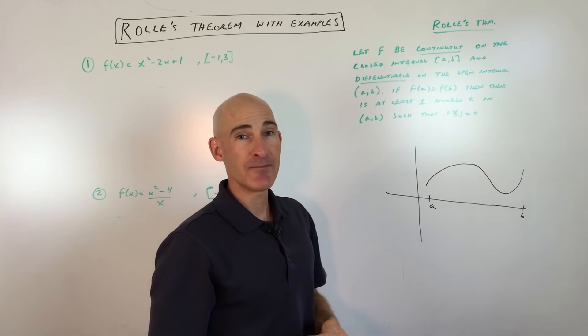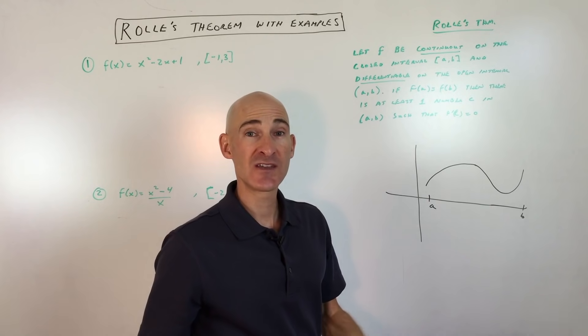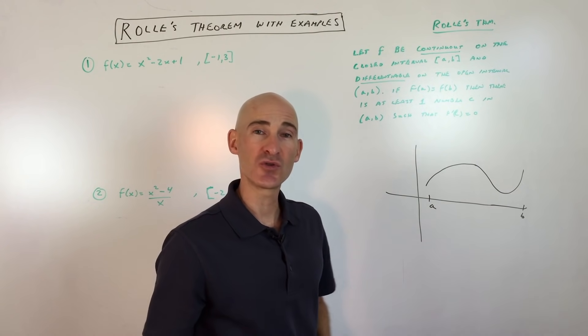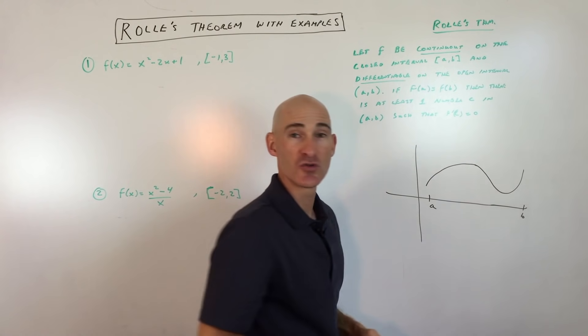Differentiable means that at any point along this curve we can find the slope, we can take the derivative, there's no corners, there's no cusps, nothing like that, it's smooth, we can take the derivative.